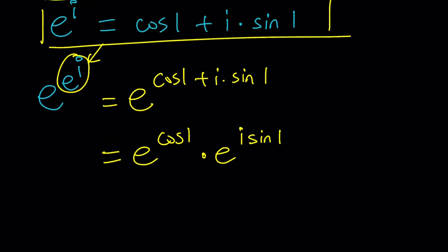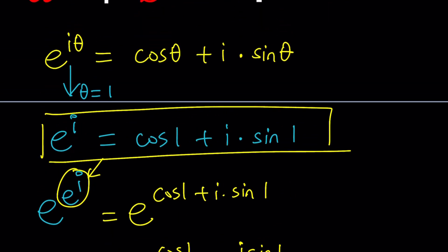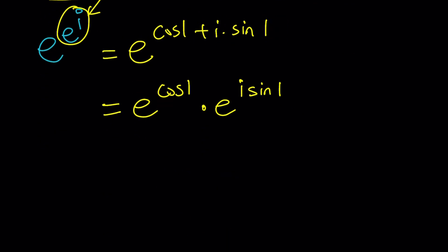we can write this as e to the cosine 1 times e to the i sine 1. And remember Euler's formula, e to the i theta. What does this look like? Just like that, right? But in this case, our new argument, if I can call that alpha if you want, right,